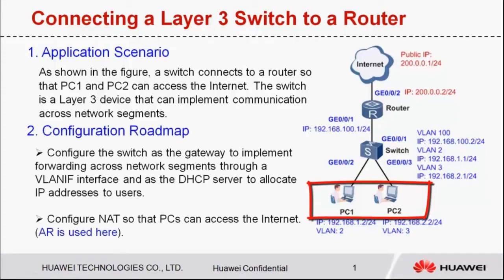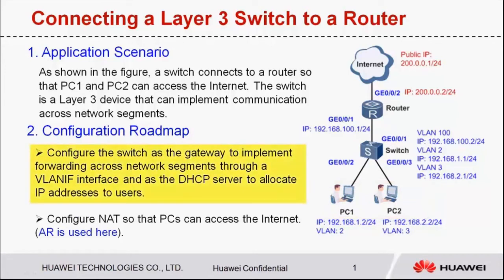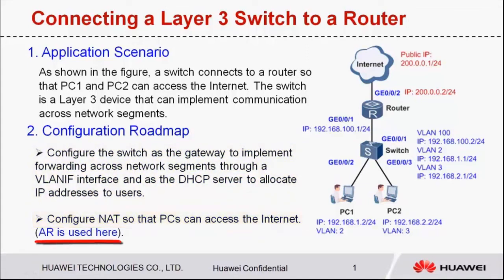The configuration roadmap is as follows. Configure the switch as the gateway to implement forwarding across network segments through a VLAN IF interface, and as the DHCP server to allocate IP addresses to users. Configure NAT so that PCs can access the internet. The AR is used as an example; the configurations of other routers are similar.